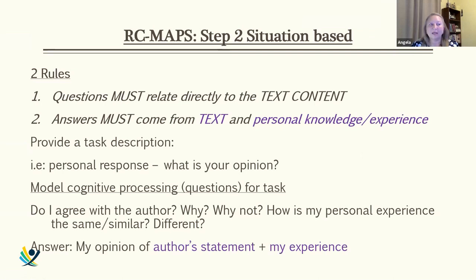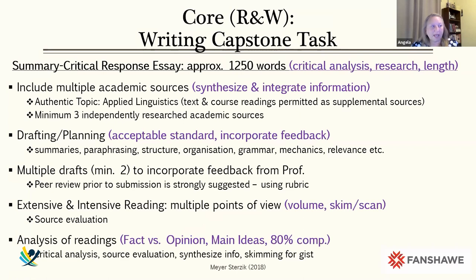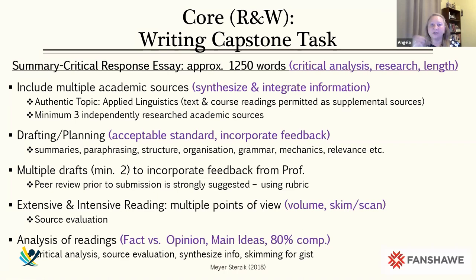Once students can write a personal response, they progress to a critical academic response — similar structure, but the knowledge base shifts from personal experience to academic sources. The final essay is a summary-critical response essay of approximately 1,250 words, incorporating critical analysis with research. It requires a minimum of three academic sources, with course readings as supplements. Students must synthesize across multiple sources, integrating information with citations. They must plan, draft, and incorporate feedback — the teacher reviews plans and requires revisions.